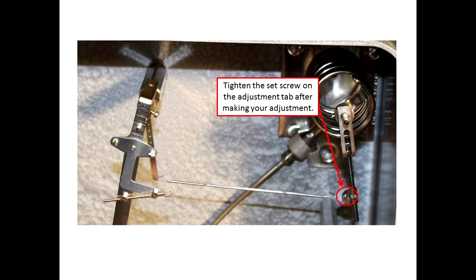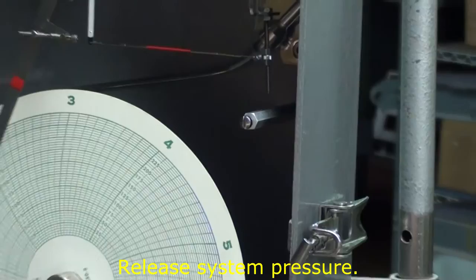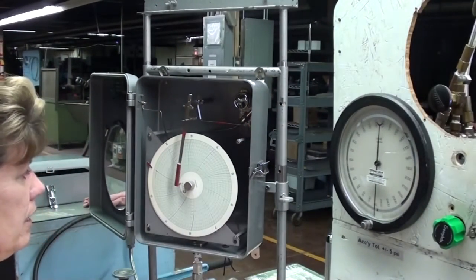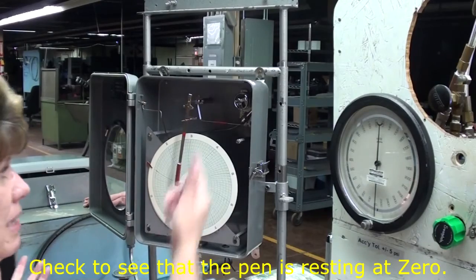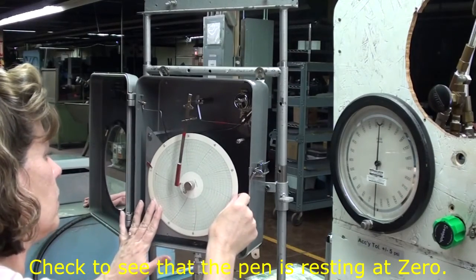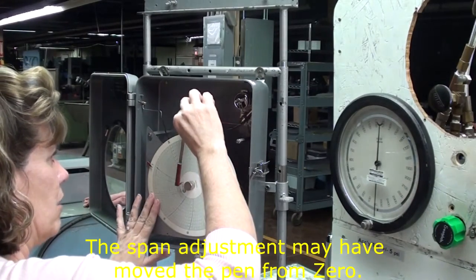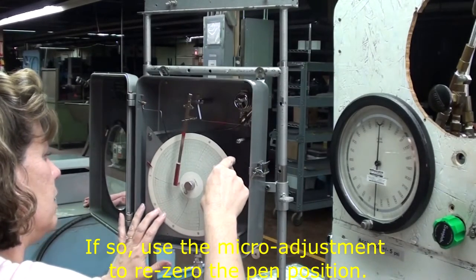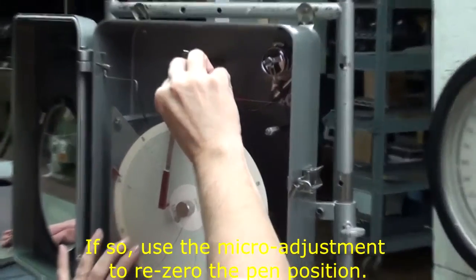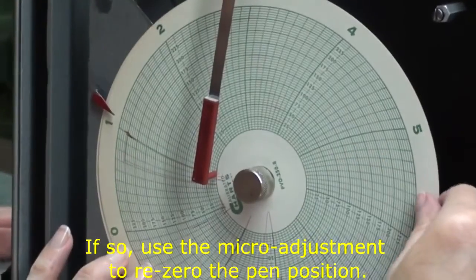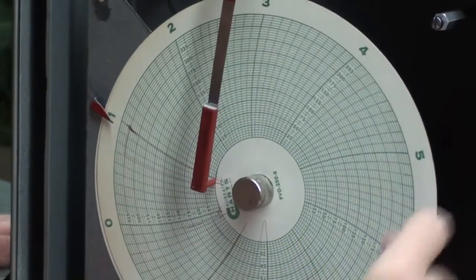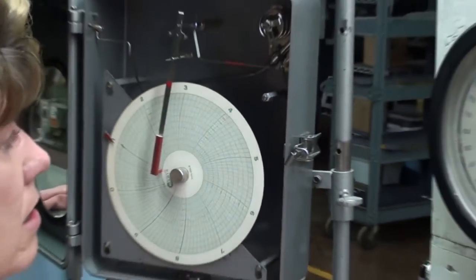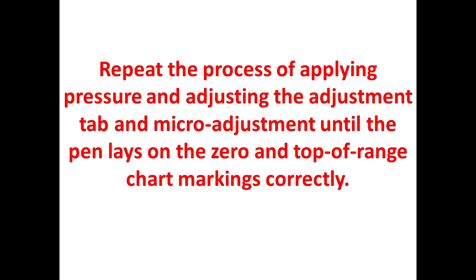So I take and release all my pressure. And as you can see, I'm no longer on zero, because I made an adjustment up here. So then I take my macro adjustment, and I adjust my span back up to zero, because I am now at zero. So now we will simply repeat the process until we get the system calibrated.